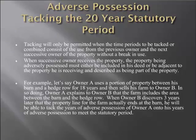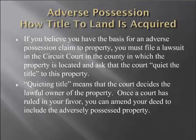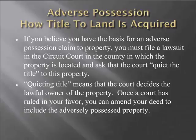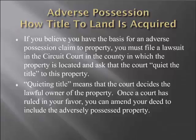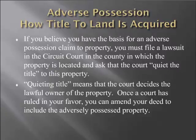If you believe you have the basis for an adverse possession claim to property, you must file a lawsuit in the circuit court in the county in which the property is located, asking the court to quiet the title. Quieting title means that the court decides the lawful owner of the property. Once a court has ruled in your favor, you can amend your deed to include the adversely possessed property. Even if you've been using property for 20 years and met the legal requirements, you still need to go through a legal process before your deed can be amended.